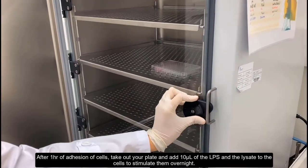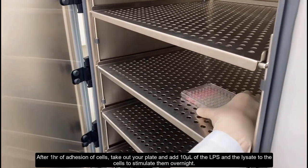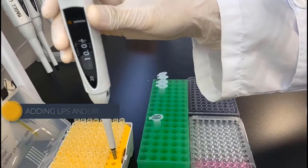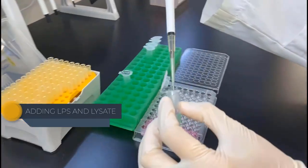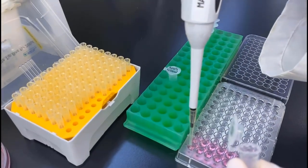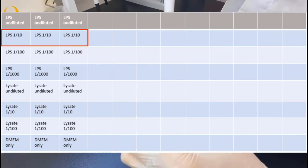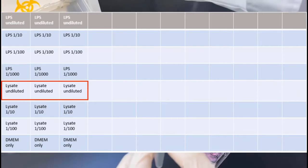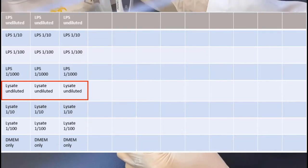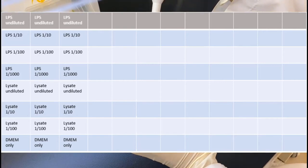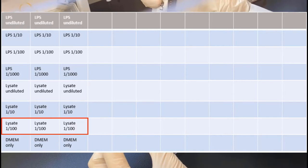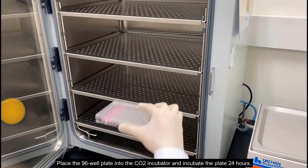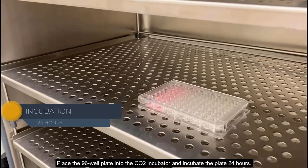After one hour of adhesion of cells, take out your plate and add 10 microliter of the LPS and the lysate to the cells to stimulate them overnight. Add the stock of LPS to well A123, 1 over 10 LPS to B123, 1 over 100 LPS to well C123 and 1 over 1000 LPS to well D123. Add undiluted lysate to well E123, 1 over 10 LPS to well F123 and add 1 over 100 LPS to well G123. Add DMEM only to well H123. Place the 96-well plate into the CO2 incubator and incubate the plate 24 hours.